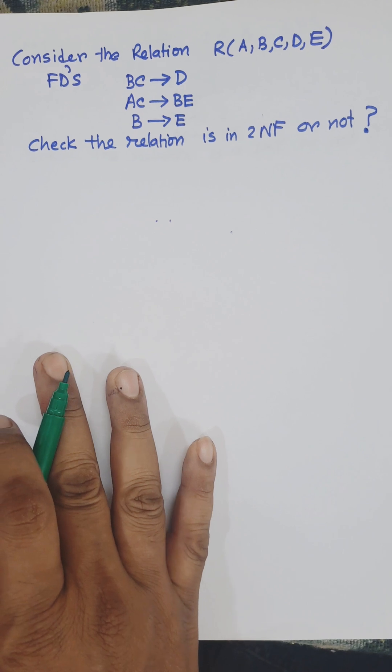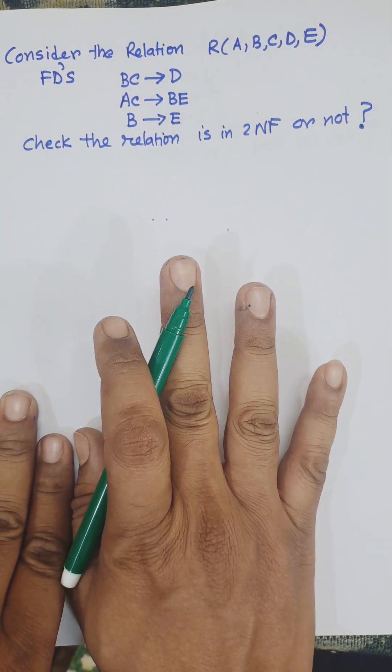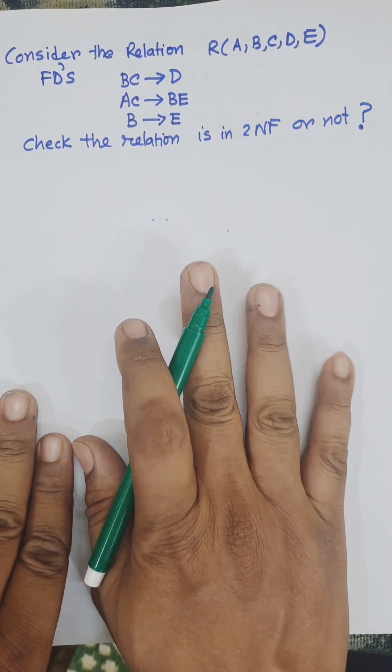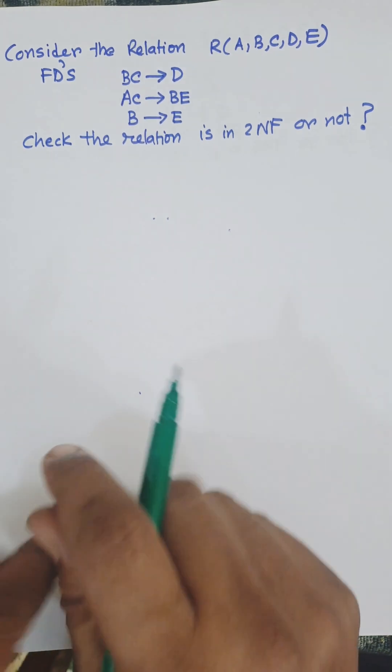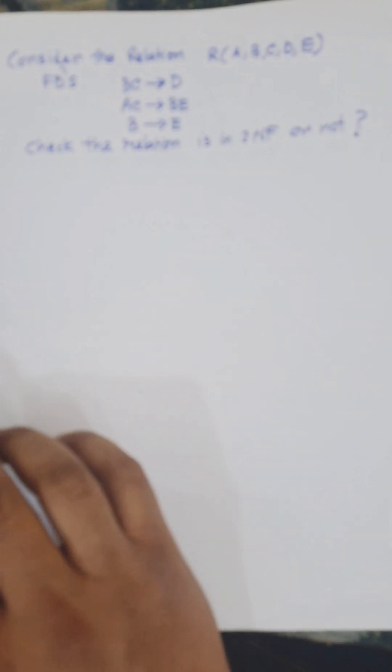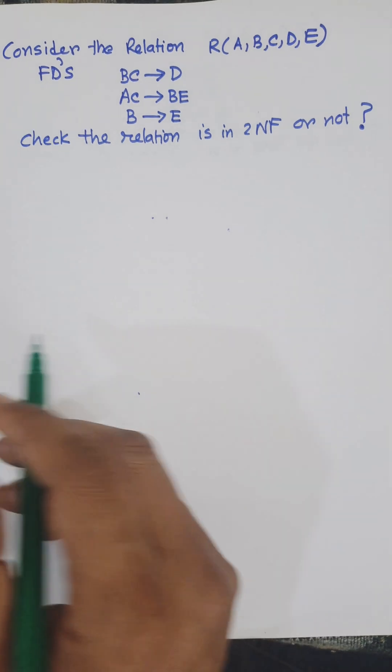First, we need to know what second normal form is. A relation is in 2NF if it is in 1NF and has no partial dependency. It is based on fully functional dependency. Let us consider the concept.